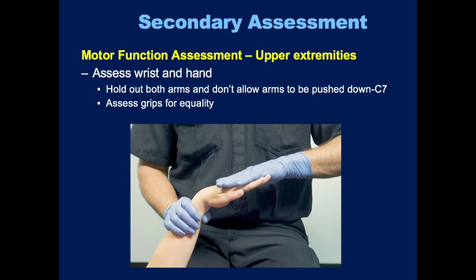Here are some ways to evaluate neurological function. To test motor function of the upper extremity: have the patient hold both arms out and say don't allow me to push your arms down — that evaluates C7. Then have them grab your fingers and say squeeze both my hands tight equally. In the picture here, the EMT is doing the wrist stabilization push-down test — you stabilize the wrist, push on the top of the hand, and ask them to push against you. This is also a test of C7.